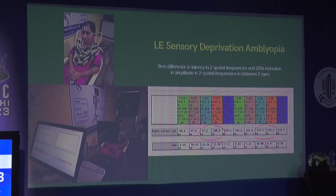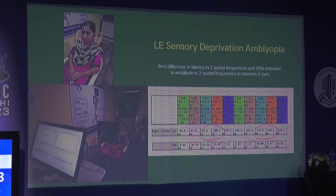A case example: a patient with left eye sensory deprivation amblyopia post-cataract surgery shows on ERG a 9-millisecond difference in latency and a 25–30 percent reduction in amplitude in two spatial frequencies.